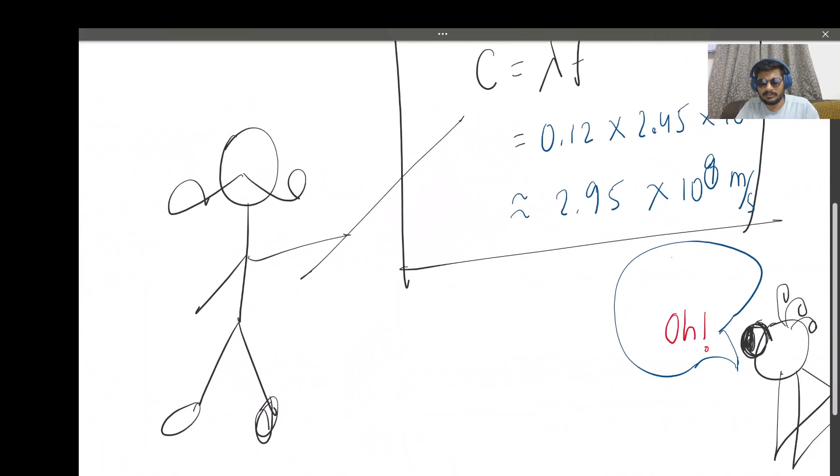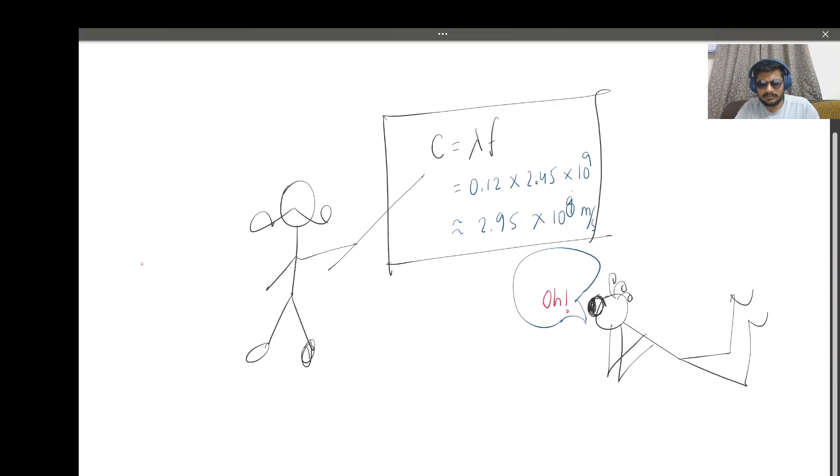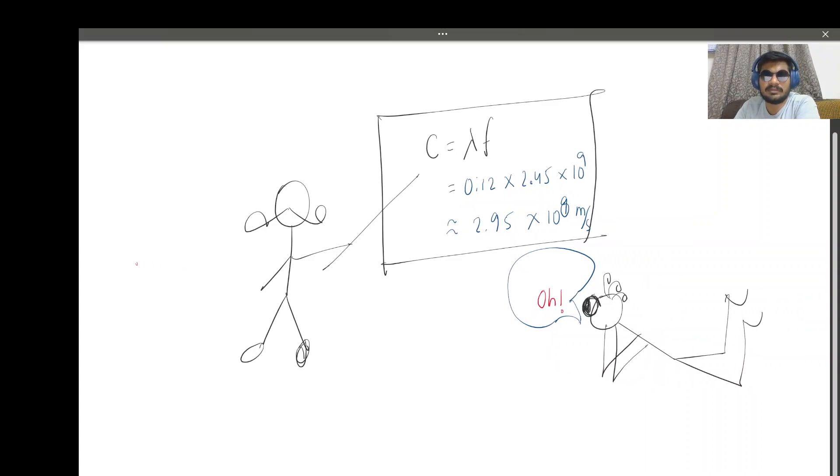Now I got the lambda value. I plug it back into my formula. C equals lambda times F, which is 0.12 times 2.45 times 10^9, roughly 2.9 times 10^8 meters per second.